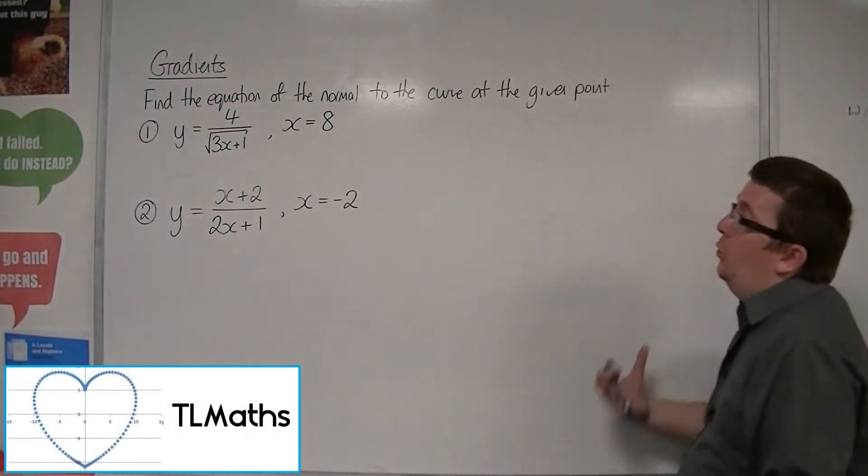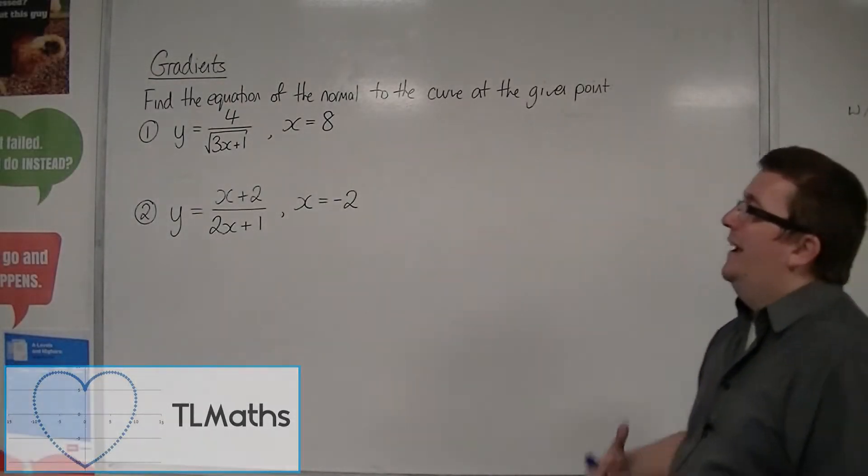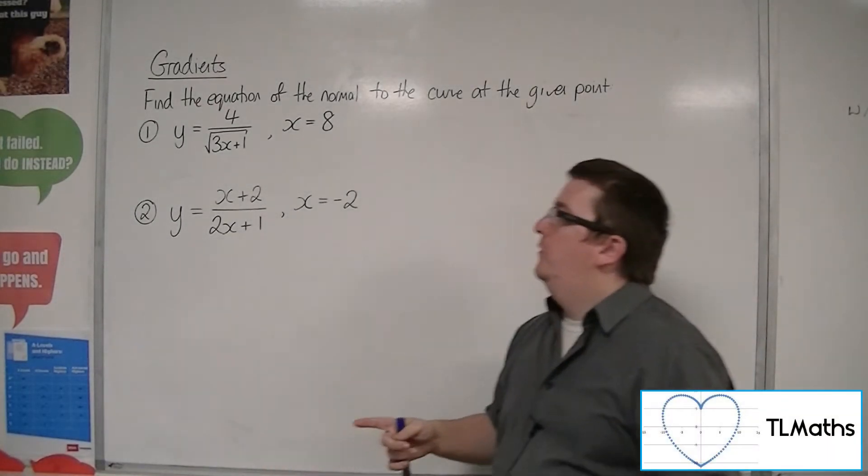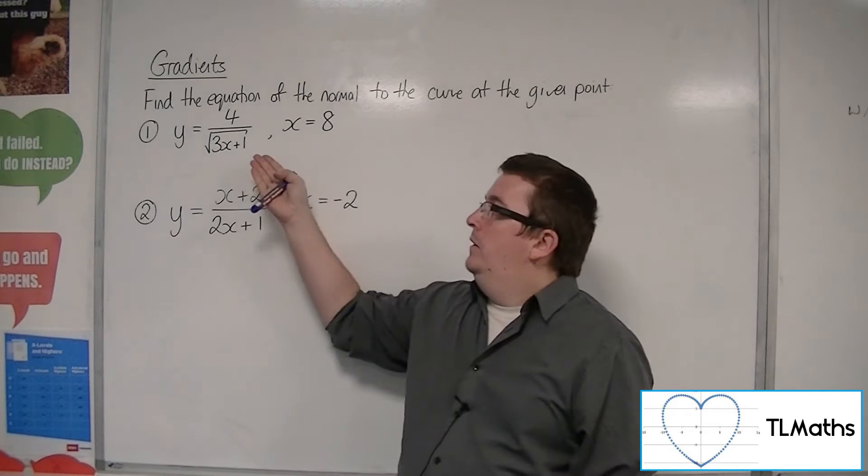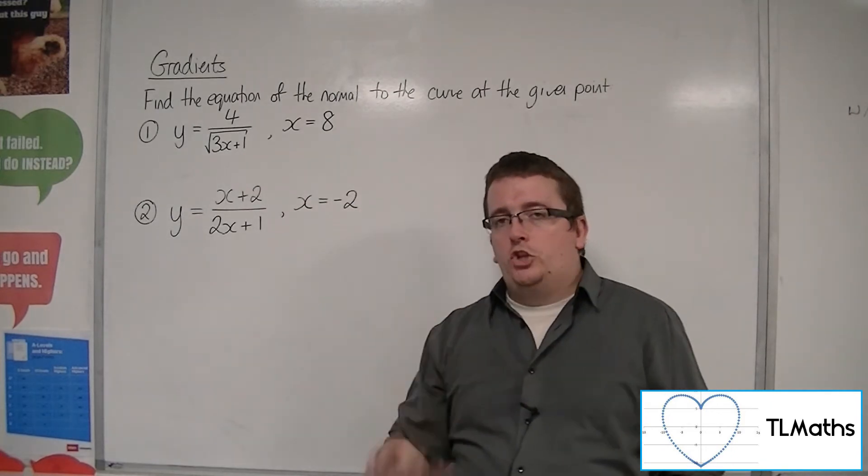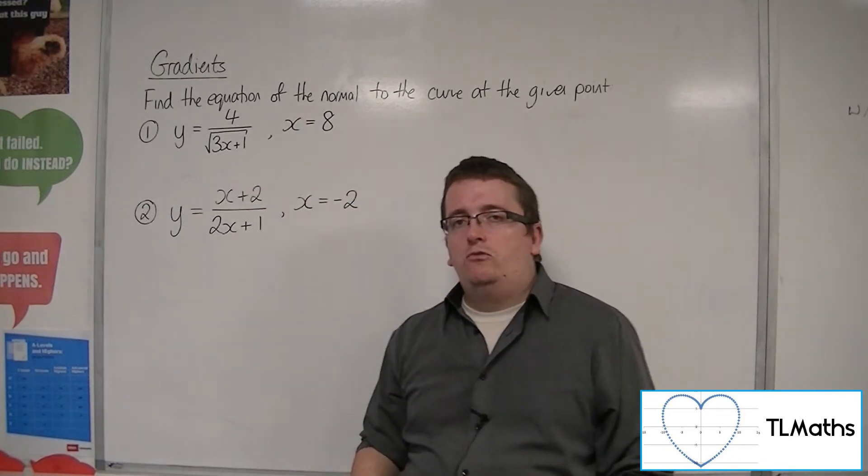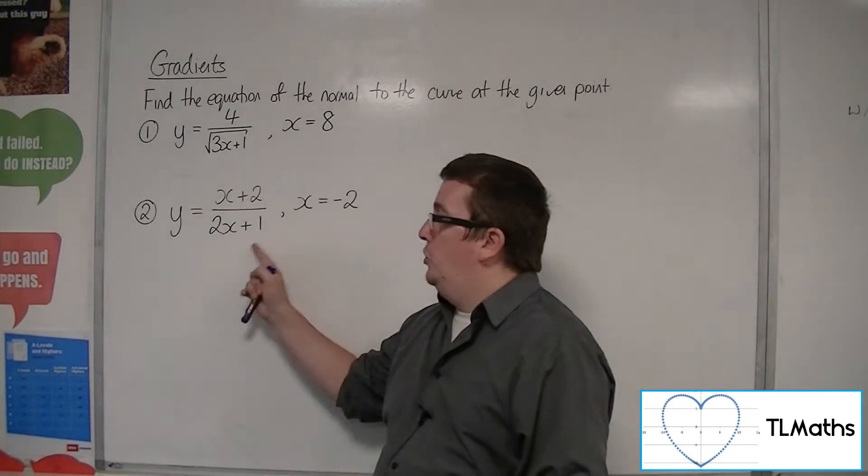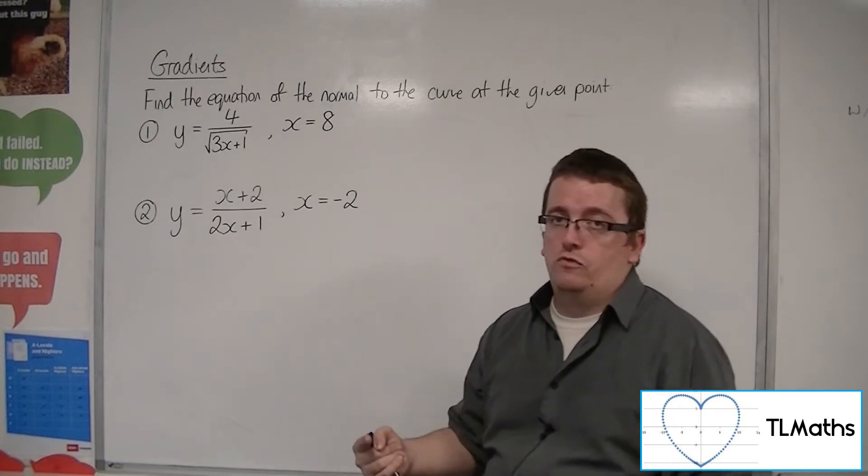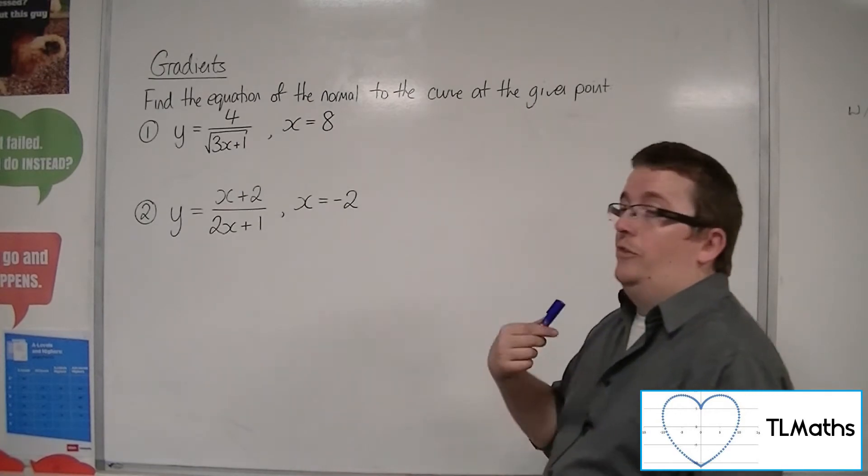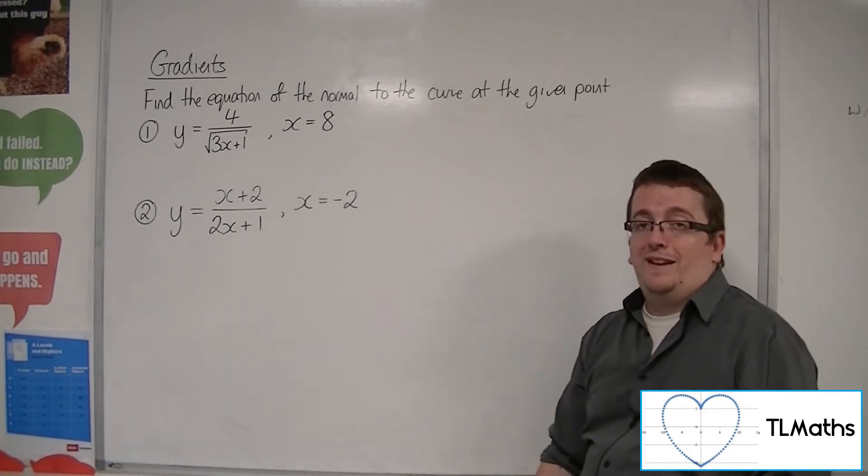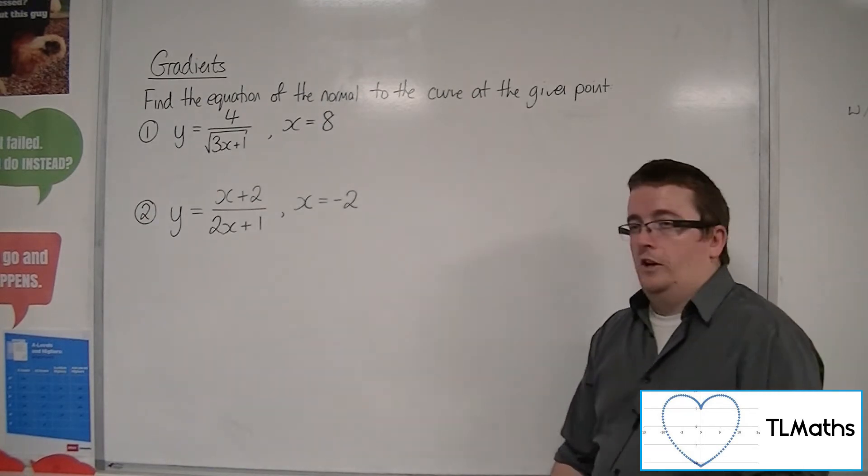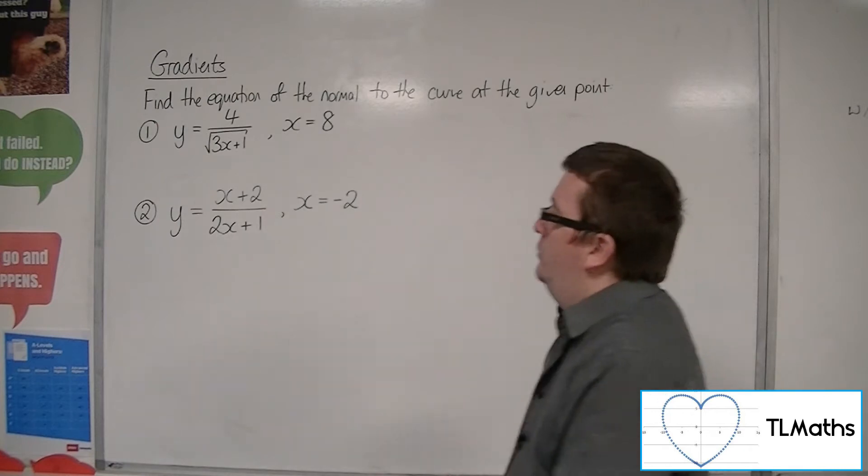In this video, we're going to look at the equation of the normal to curves at a given point. Now, a bit of warning for this. Number one will require us to use the chain rule, so if you've never seen the chain rule before, you need to go and look at that first. And number two, we will use the quotient rule for differentiation, so if you haven't seen that before, you'll have to look at that first before you can progress with this video.